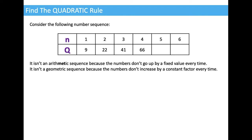It isn't a geometric sequence because the numbers don't increase by a constant factor every time. Whatever you have to multiply 9 by to get 22 isn't the same as what you have to multiply 22 by to get 41, and that isn't the same as what you have to multiply 41 by to get 66. So there isn't a constant ratio from one term to the next.